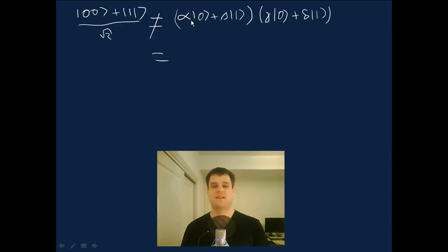So we expand this state out as: Well, the amplitude for 0,0 is going to be α times γ. The amplitude for the 0,1 state is going to be αδ |01⟩. The amplitude for the 1,0 state is βγ. And the final amplitude for 1,1 is βδ.